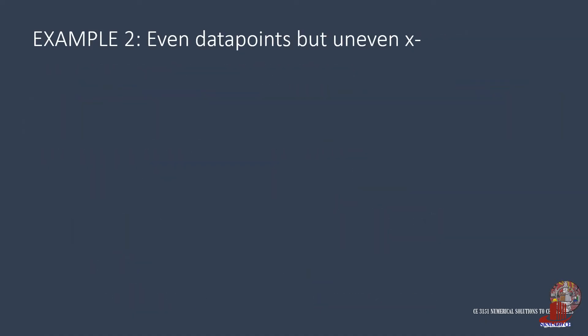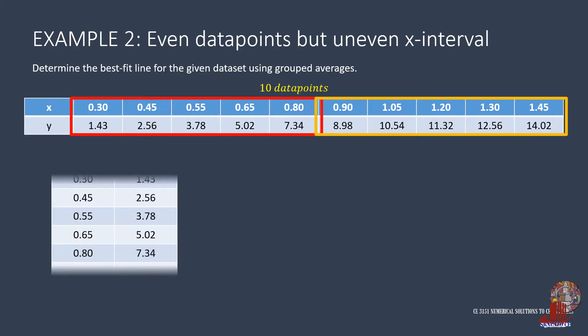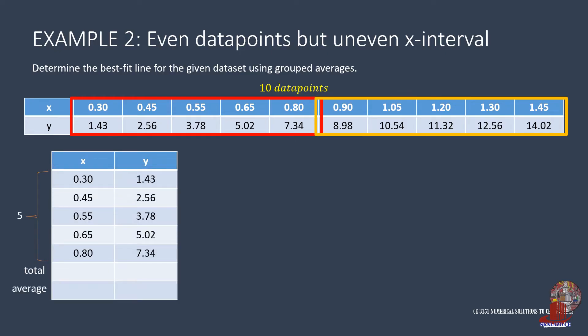The second example also has even data points but an uneven x interval. With 10 data points, each group will have 5 data pairs. So the first group takes x as 0.3, 0.45, 0.55, 0.65, and 0.8.